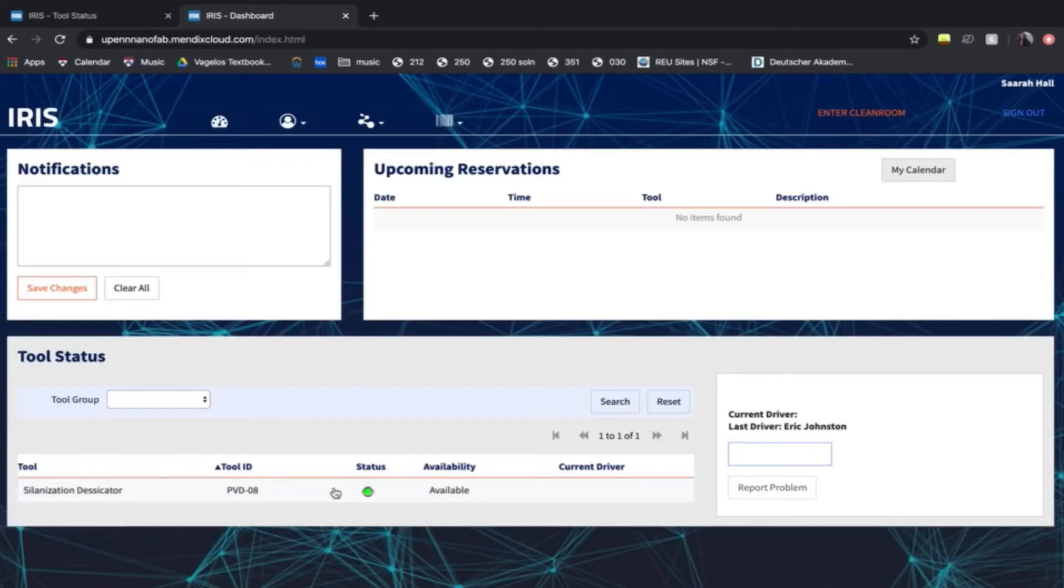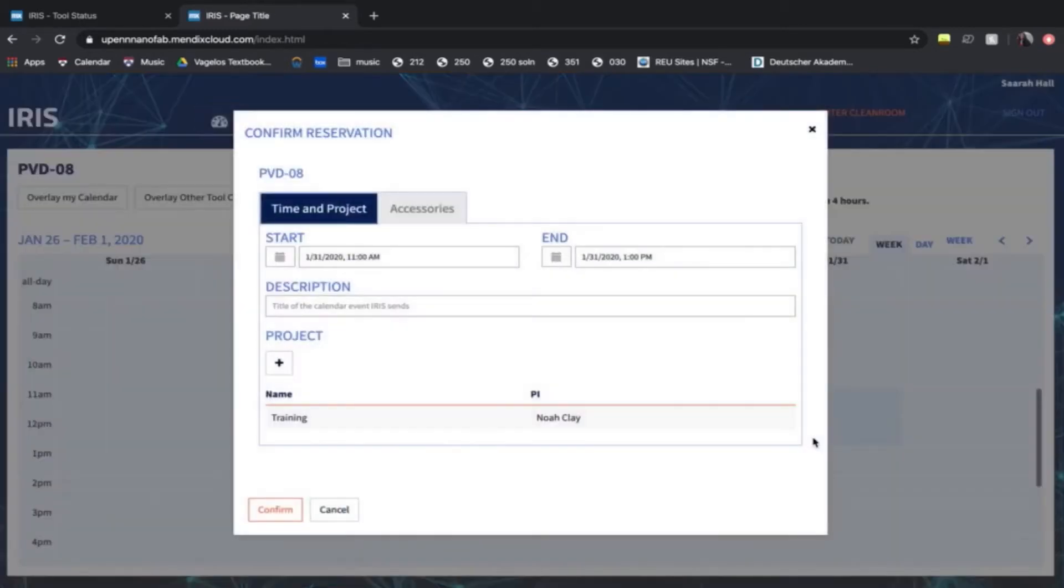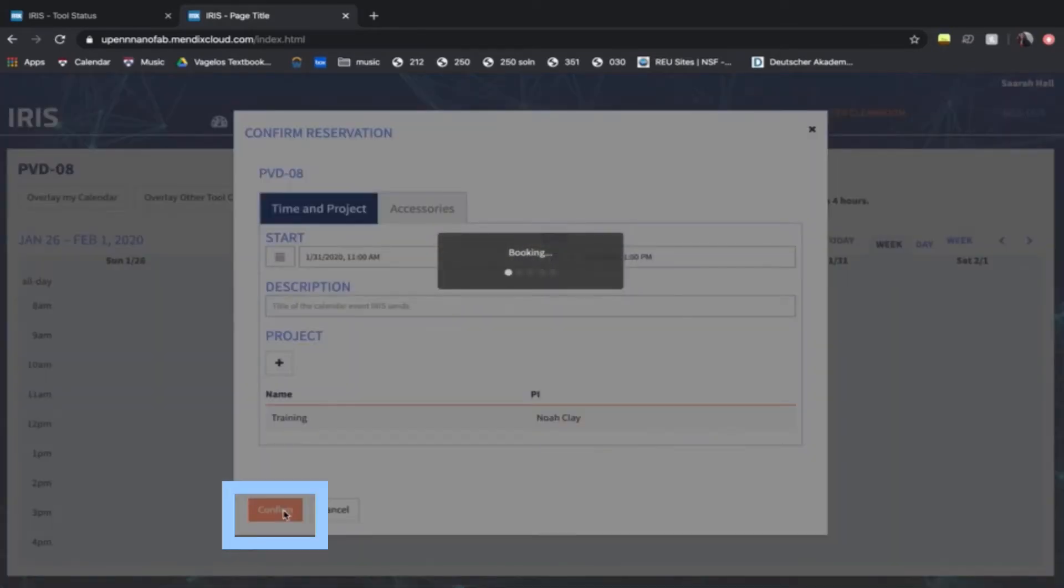Select the tool, click the calendar button, and request a time slot. Two hours or so should be enough. Then press confirm and enter clean room.